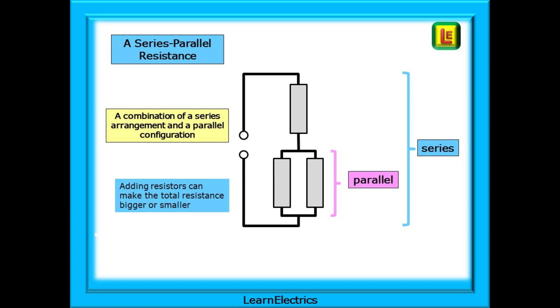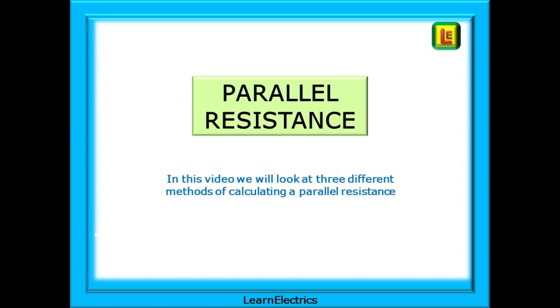And we can have series parallel circuits, where some resistances are in parallel, and then these are in series with other resistors. Adding resistances to this circuit can increase the resistance, or decrease the resistance, depending on where the extra resistance is added. Something that we will cover in more detail in another video. For now, we want to concentrate on parallel circuits. And in this video, we will look at the three different methods of calculating a parallel resistance.